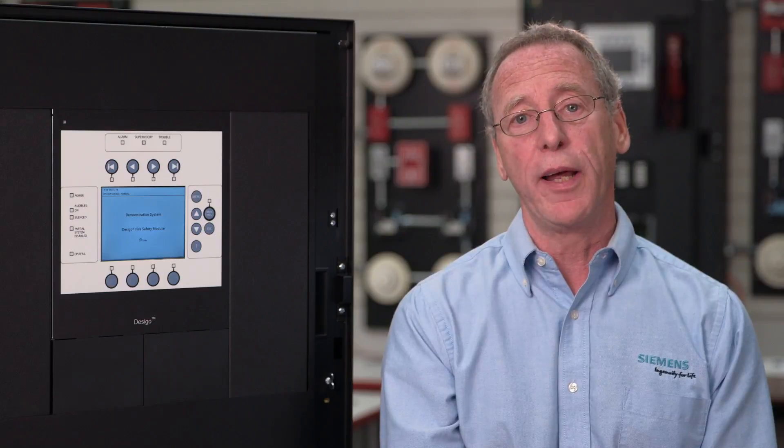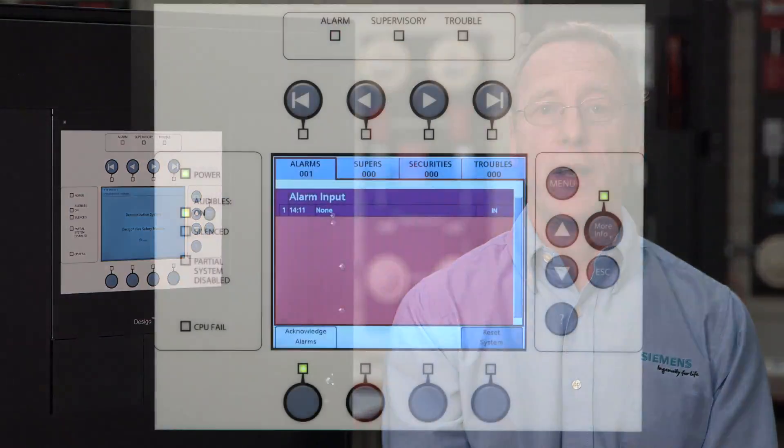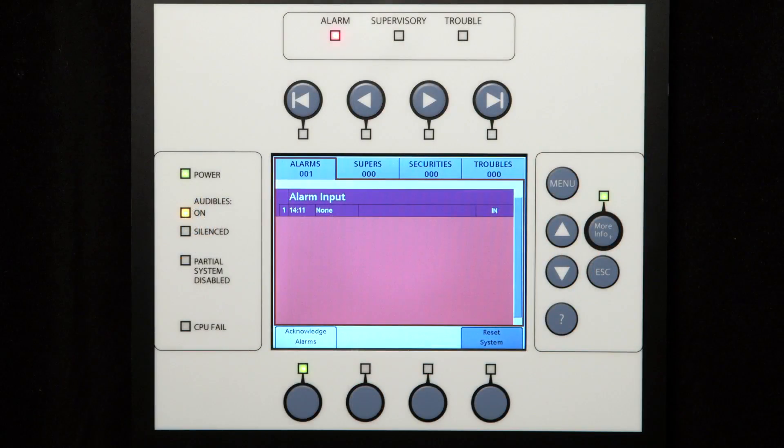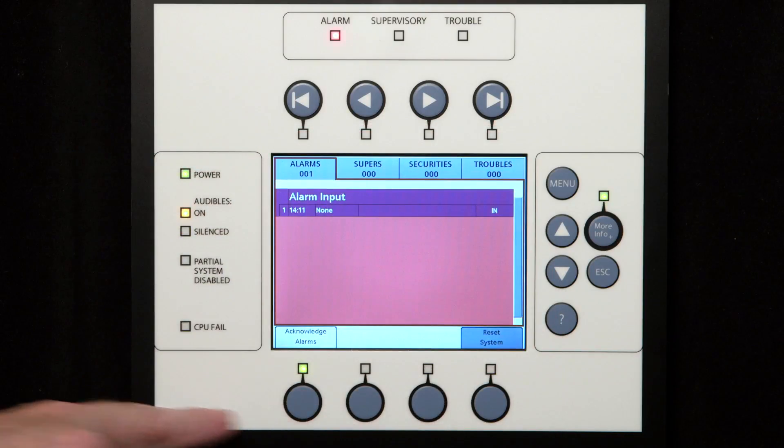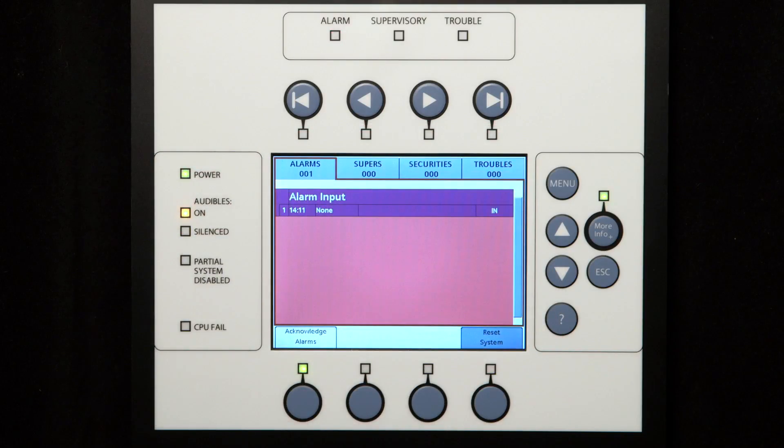Now we'll concentrate on the display and the event controls. There are a set of four buttons above and four below the LCD screen. These are soft buttons that change depending on each specific situation. For this discussion, we will focus on the buttons below the LCD.